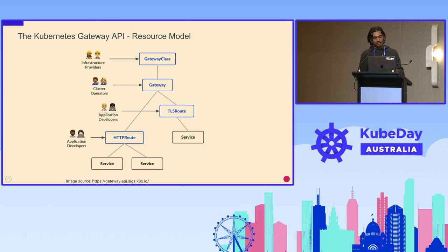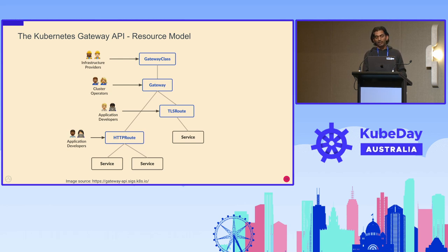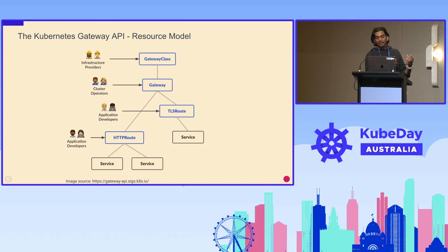Before using the Gateway API specification, it's very important to understand their resource model. In their resource model, they have different personas. The first level is the infrastructure provider — these are the ones who determine what kinds of gateway implementations are available in the infrastructure, basically defining a few allowed gateway types. Then comes the cluster operator, who actually instantiates and runs the gateway. They refer to one of the defined gateway classes and instantiate it with specific ports, security protocols, and schemes.